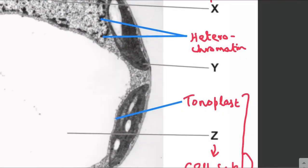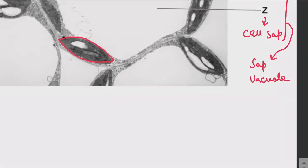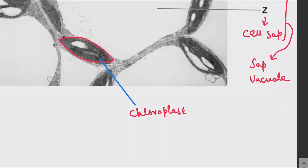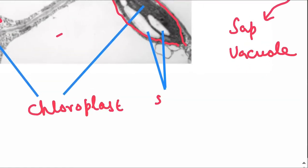The sap vacuole pushes the cytoplasm to the edge, so we have organelles at the edges. Over here you can see a biconvex structure — this biconvex structure is basically the chloroplast. These are the chloroplasts, which are biconvex structures. You can also see the starch grains in the chloroplasts — these white large particles are starch grains.